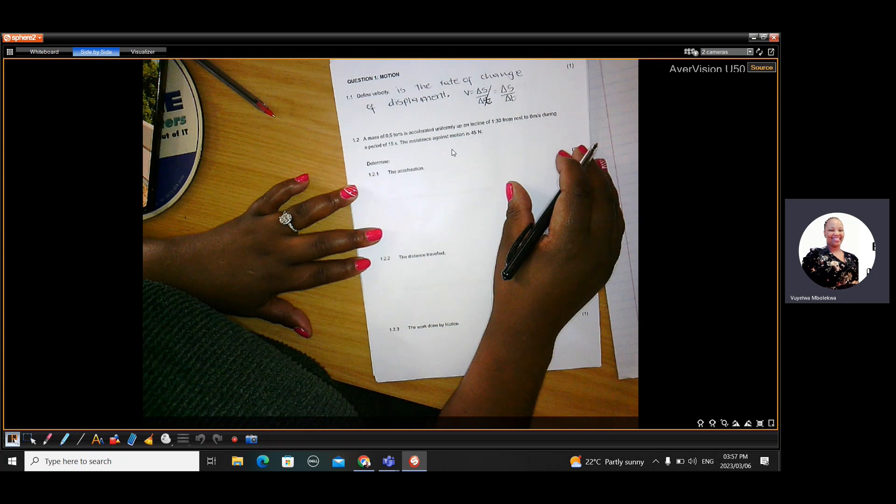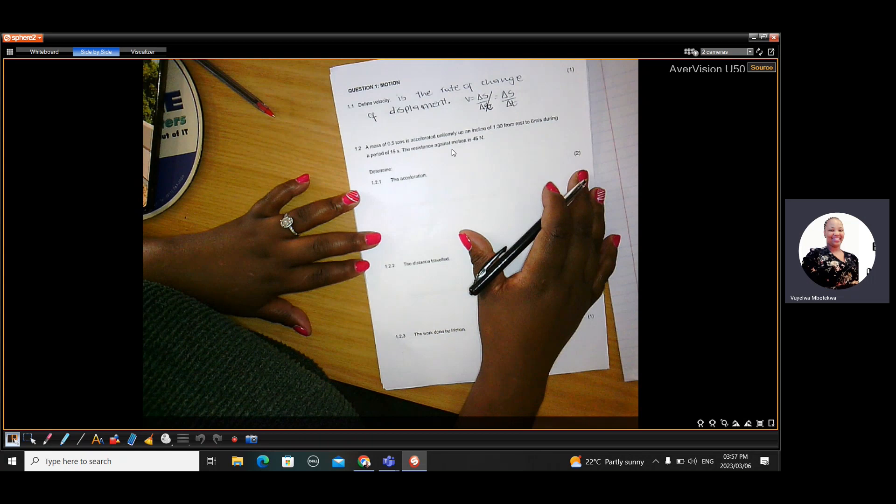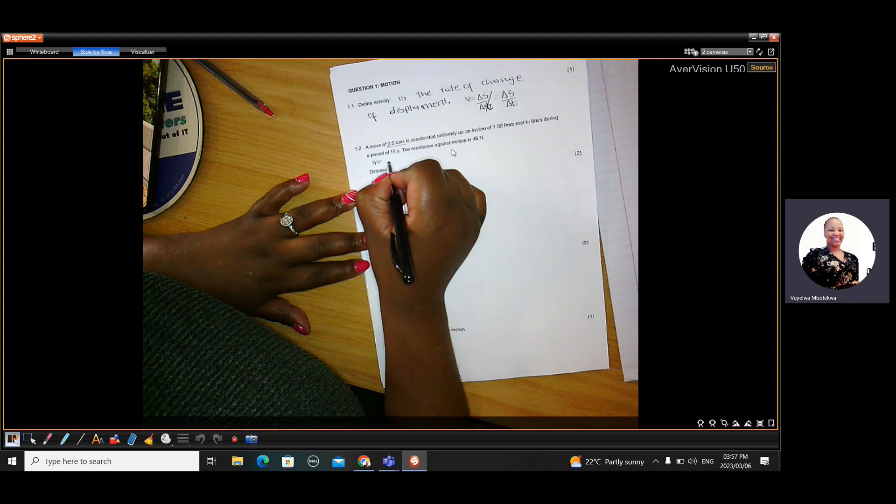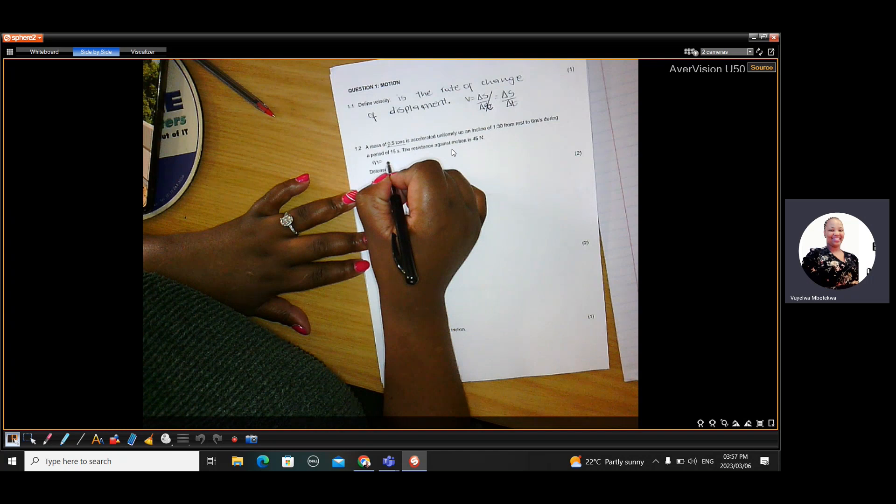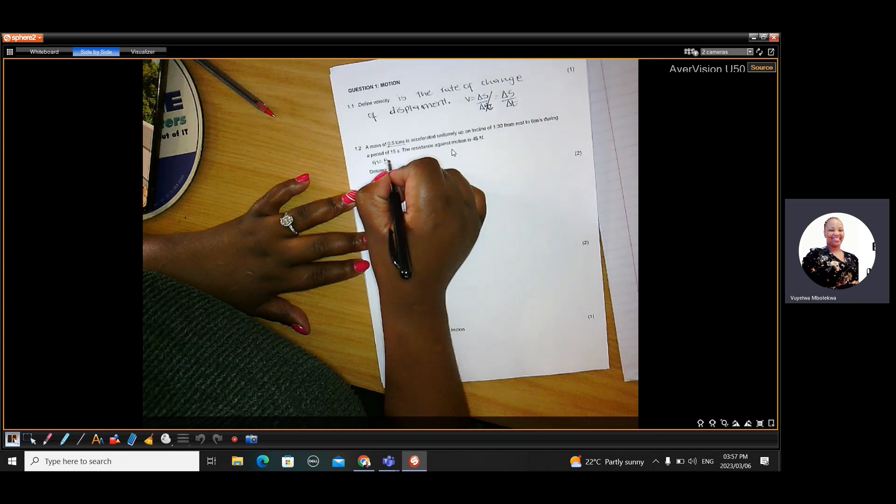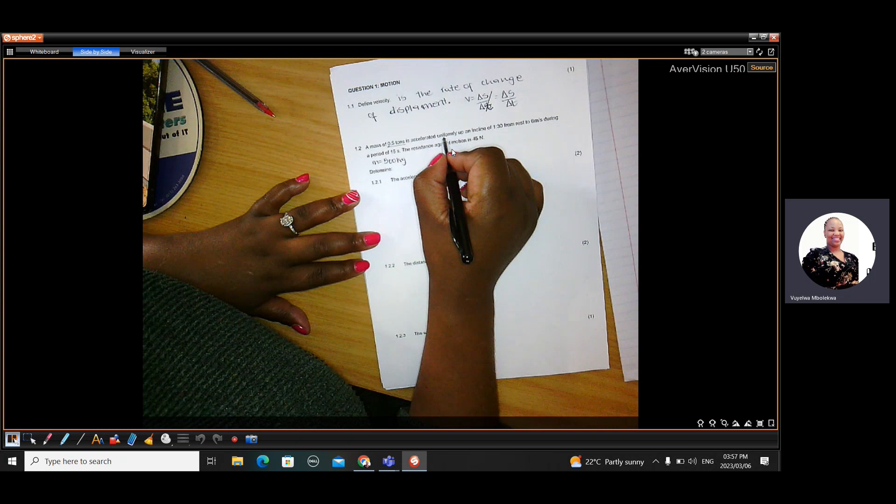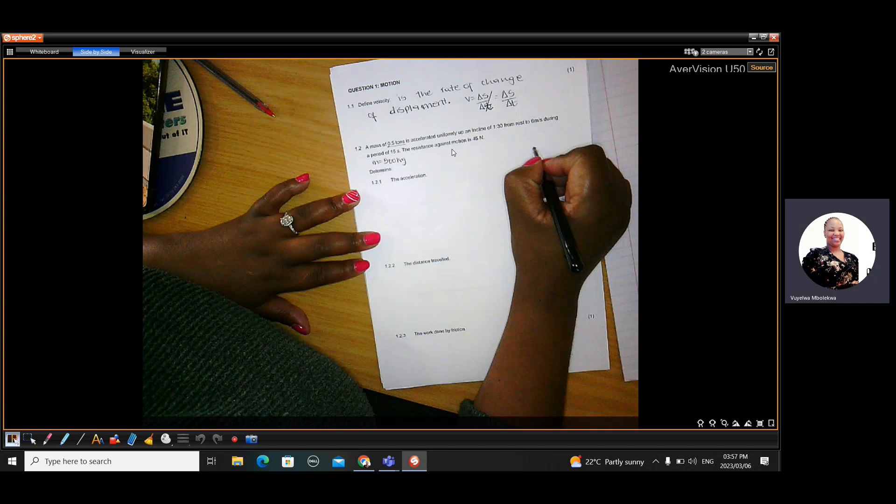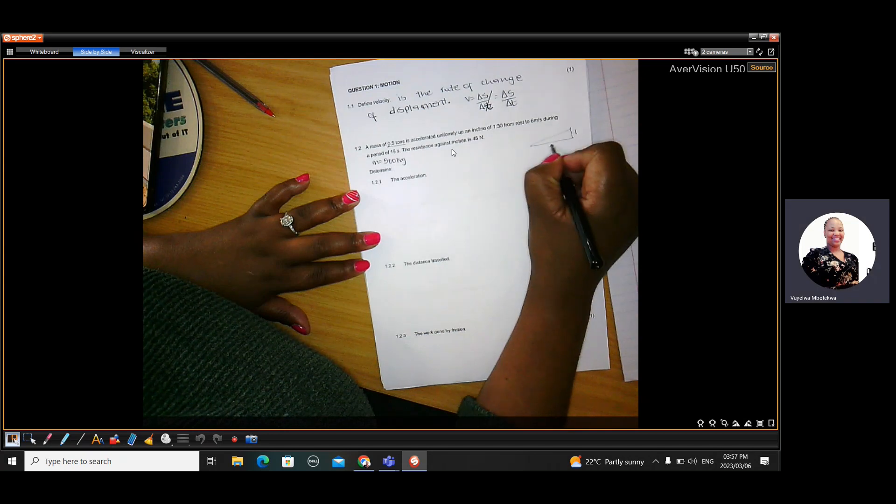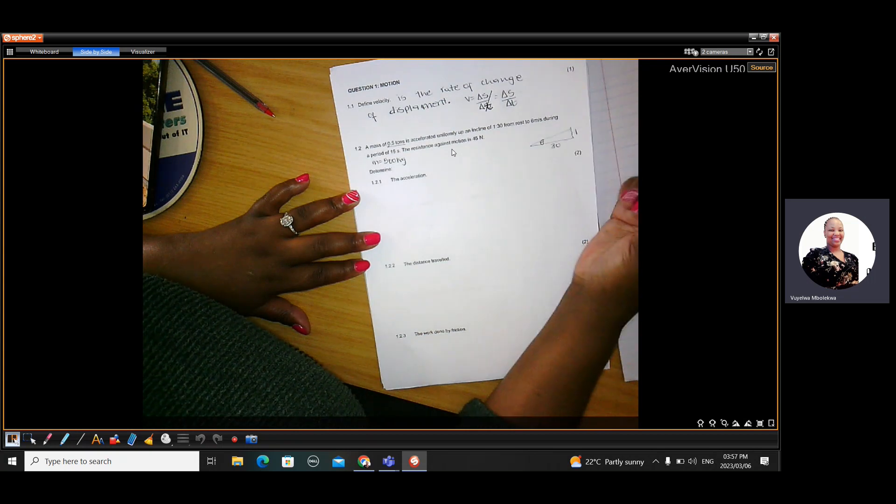Okay, and now question 1.2, they give you information. They give you a mass of 0.5 tons. You need to convert it to kilograms. So 1 ton equals 1,000 kilograms, so this would have been 0.5 times 1,000, which is 500 kilograms. It is accelerated uniformly up an incline of 1 is to 30. So when they give you that slope, 1 is the opposite side and 30 is the adjacent side. And this is the angle that they are looking for. So to get that angle, you will use tan theta equals opposite over adjacent.